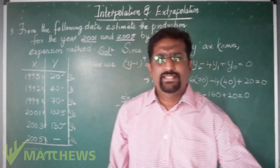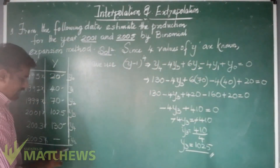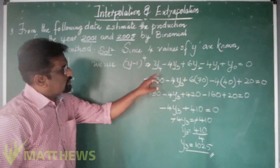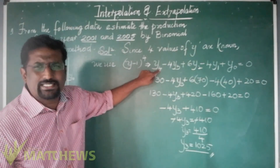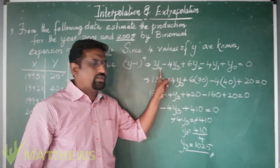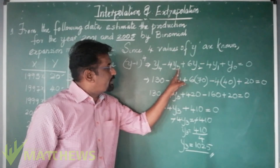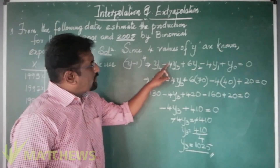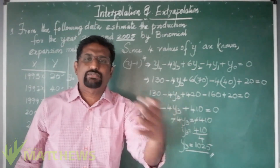Now we have one more missing value, Y5. To find it, we use the same expansion but increase all the suffixes by 1. The binomial coefficients and signs remain the same — only the suffixes are incremented by 1. So Y4 becomes Y5, Y3 becomes Y4, Y2 becomes Y3, Y1 becomes Y2, and Y0 becomes Y1.